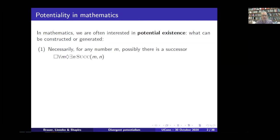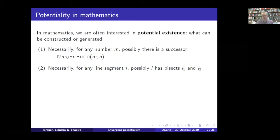If you look at how mathematical language was used prior to the 19th century and still is used by constructivists, they say things like: one, that necessarily for any number M, possibly there is a successor — or however many numbers you have generated, you can generate a successor. And here's another example, two: necessarily, given any line segment, possibly you could cut it in two, possibly there are two pieces.